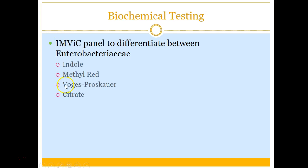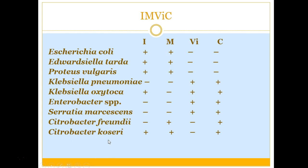Here are common IMVIC results for different Enterobacteriaceae organisms. Definitely memorize E. coli: Indole positive, Methyl Red positive, Voges-Proskauer negative, Citrate negative. Also memorize Proteus vulgaris and Klebsiella pneumoniae — those three are the most crucial to remember. Micro is unfortunately a memorization kind of thing, so do your best to get these down.